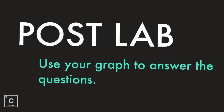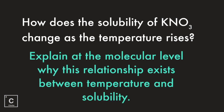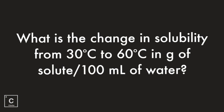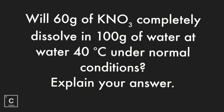Okay y'all, you know there's got to be post-lab questions. Make sure you use your graph that you just created to answer these questions. How does the solubility of potassium nitrate change as the temperature rises? Explain at the molecular level why this relationship exists between temperature and solubility. How many grams of potassium nitrate can be dissolved in 100 milliliters of water at 50 degrees Celsius and at 70 degrees Celsius? What is the change in solubility from 30 to 60 degrees Celsius in grams of solute per 100 milliliters of water? Will 60 grams of potassium nitrate completely dissolve in 100 grams of water at 40 degrees Celsius? Make sure you explain your answer — don't just give me a yes or a no.